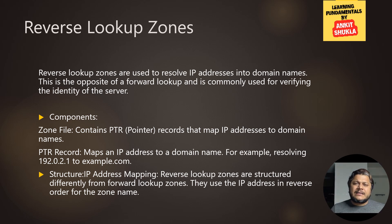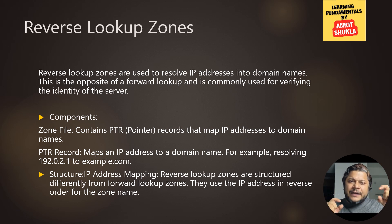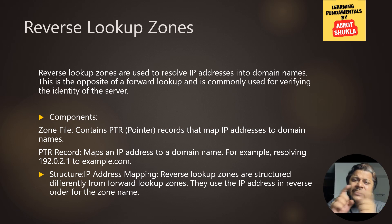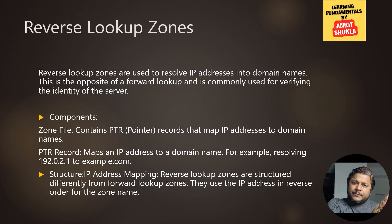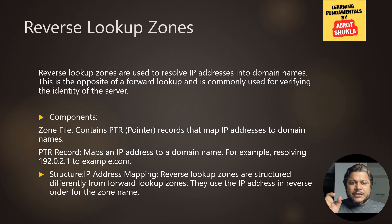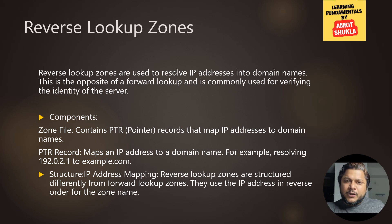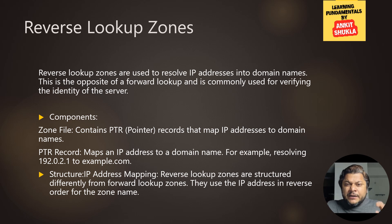Reverse lookup zones are like the index at the back of a book, helping you find topics based on a keyword. In DNS, the reverse lookup zone does the exact opposite of the forward lookup zone — it translates IP addresses back to domain names, confirming the identity of the server. For example, querying IP address 192.0.2.1 via reverse lookup can reveal that it belongs to example.com. Components of a reverse lookup zone include PTR (Pointer) records, which link IP addresses to domain names.